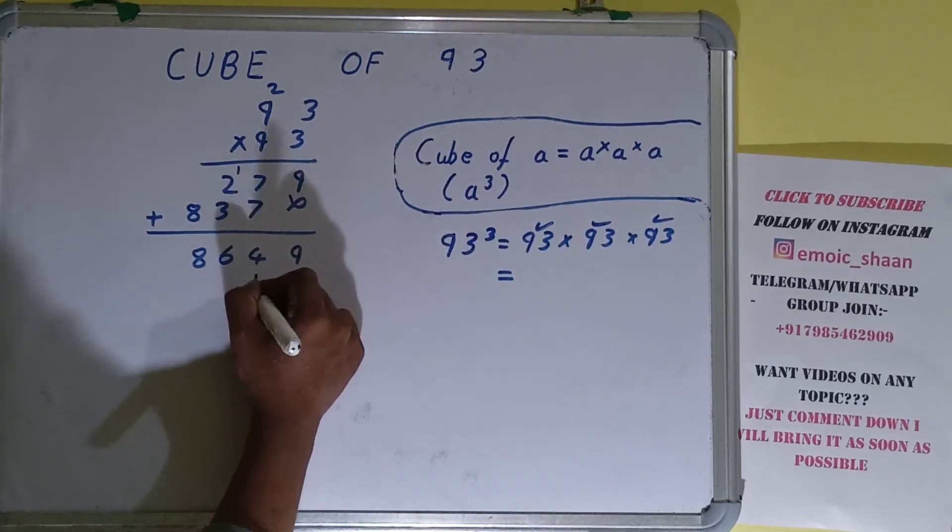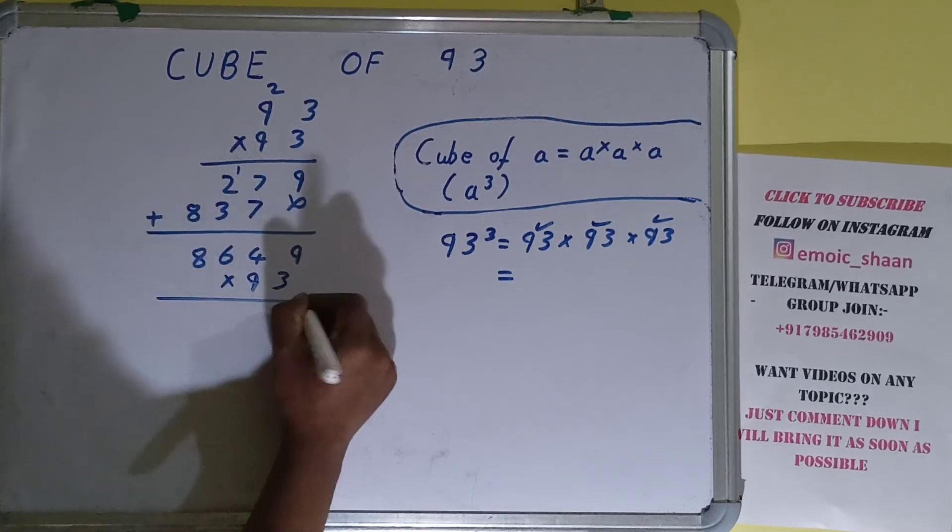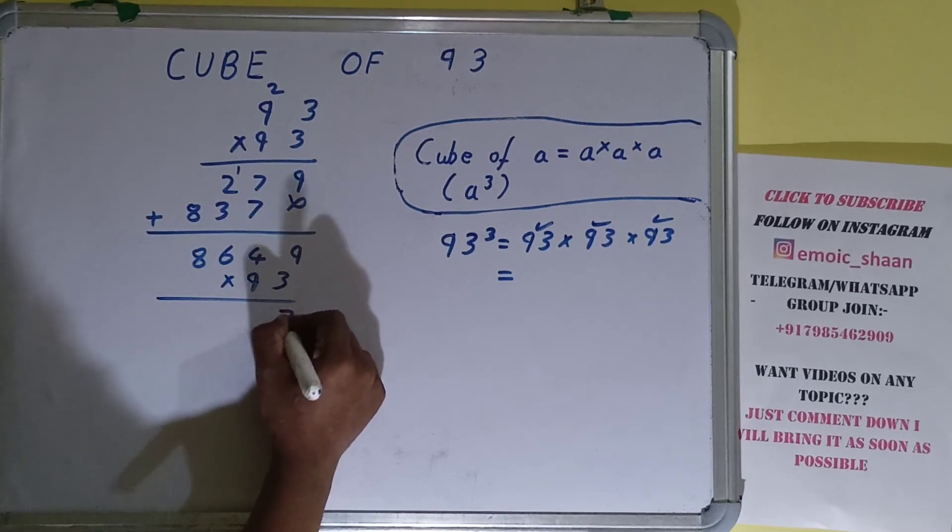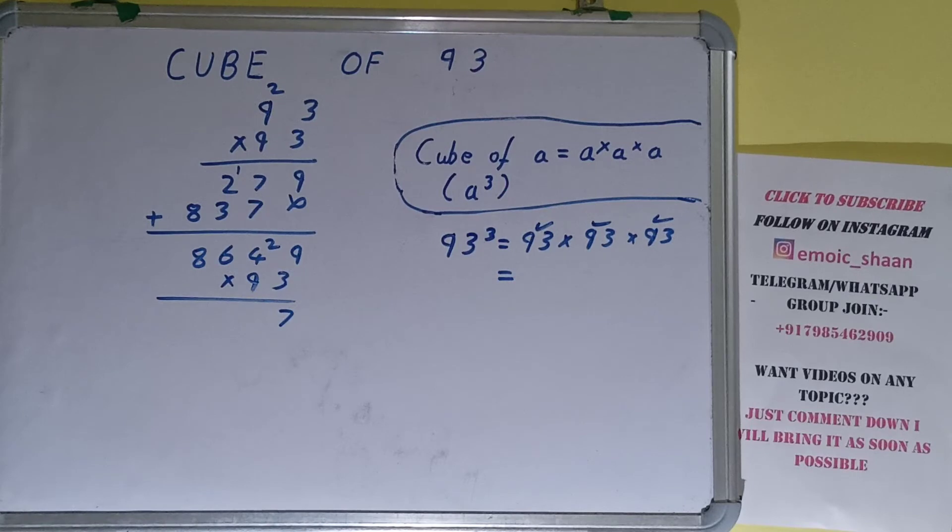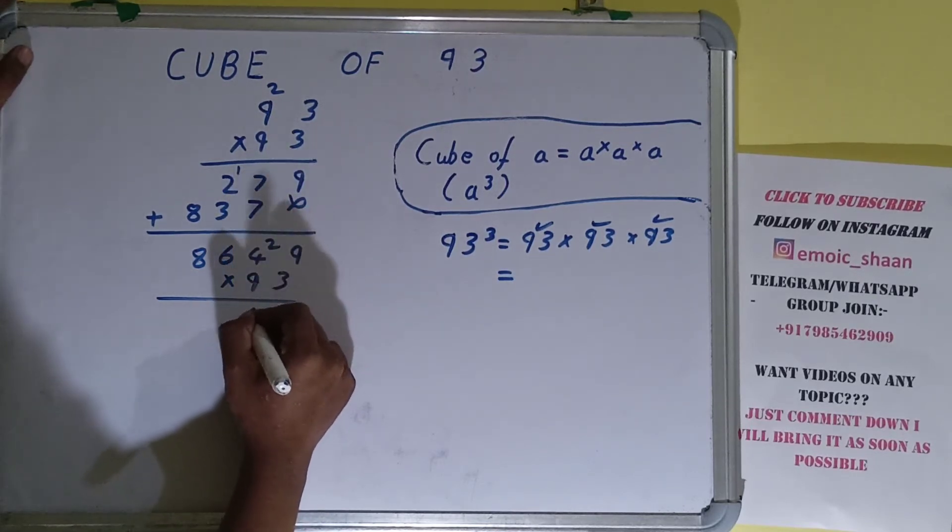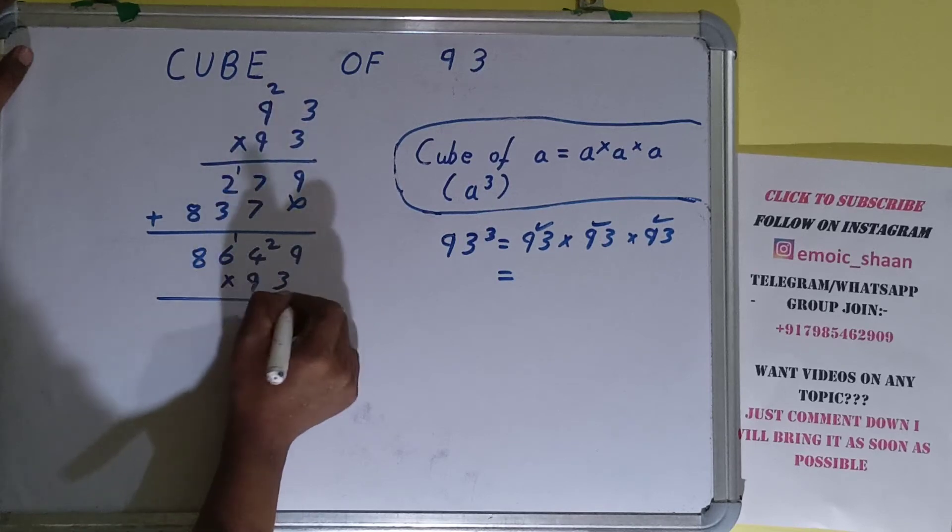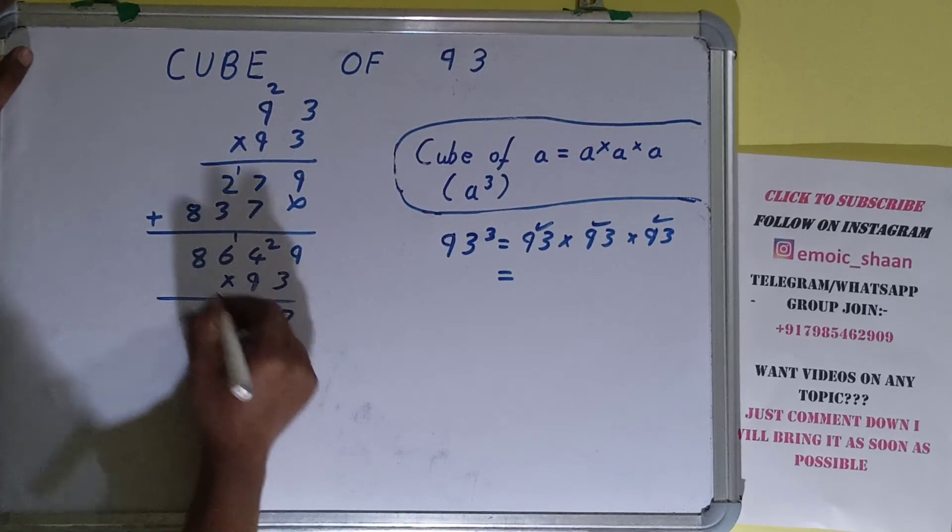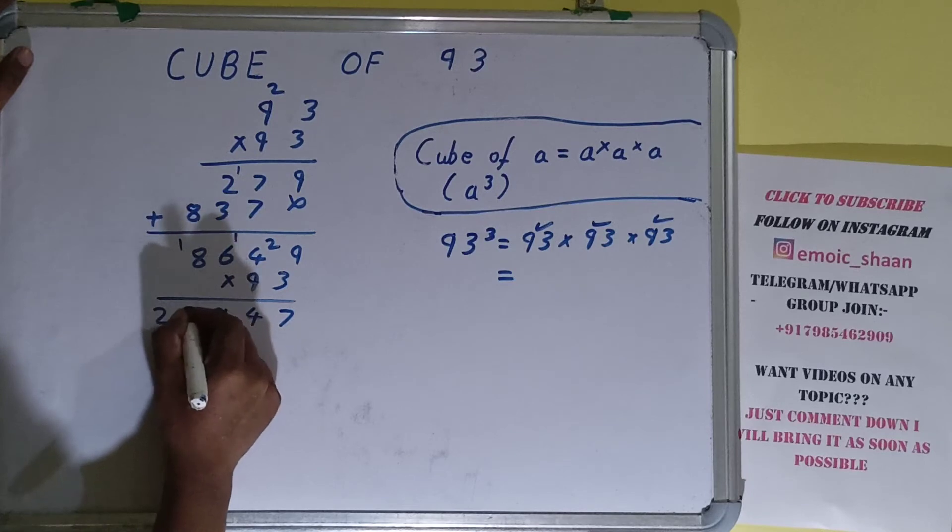So let's multiply. 9×3 is 27, 2 carry. 4×3 is 12 plus 2 is 14, 1 carry. 6×3 is 18 plus 1 is 19, 1 carry. 8×3 is 24 plus 1 is 25.